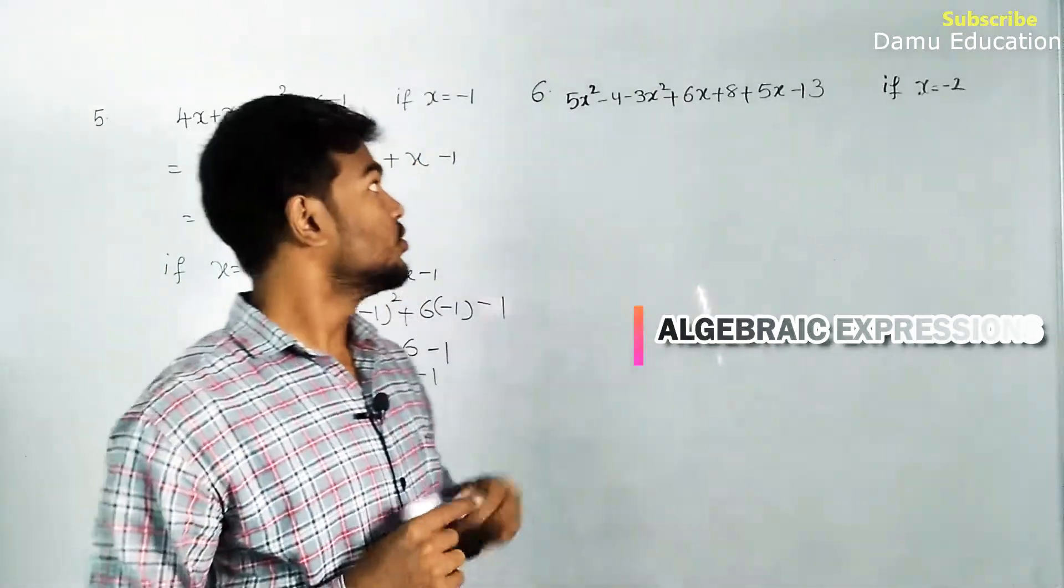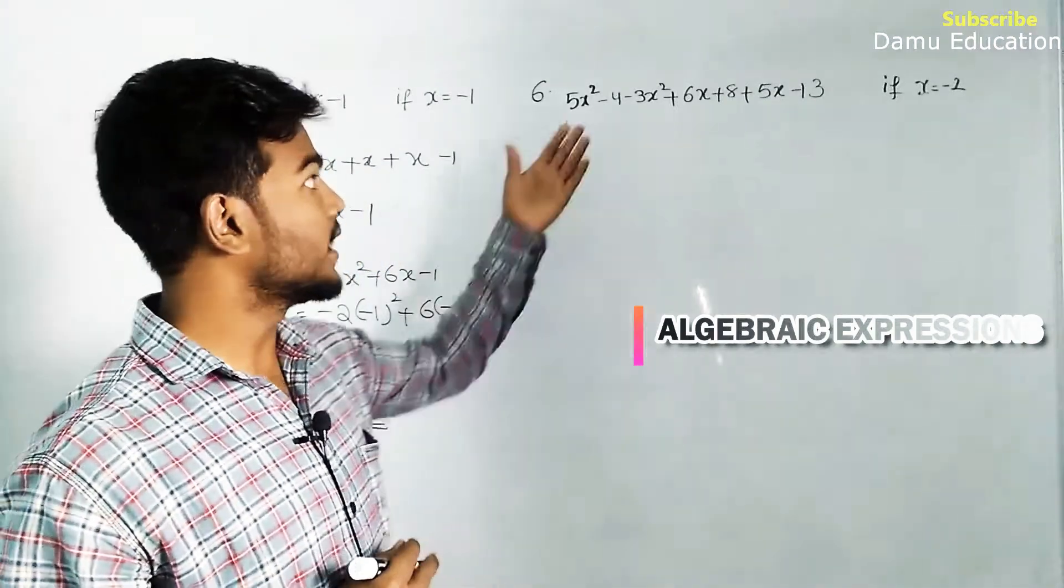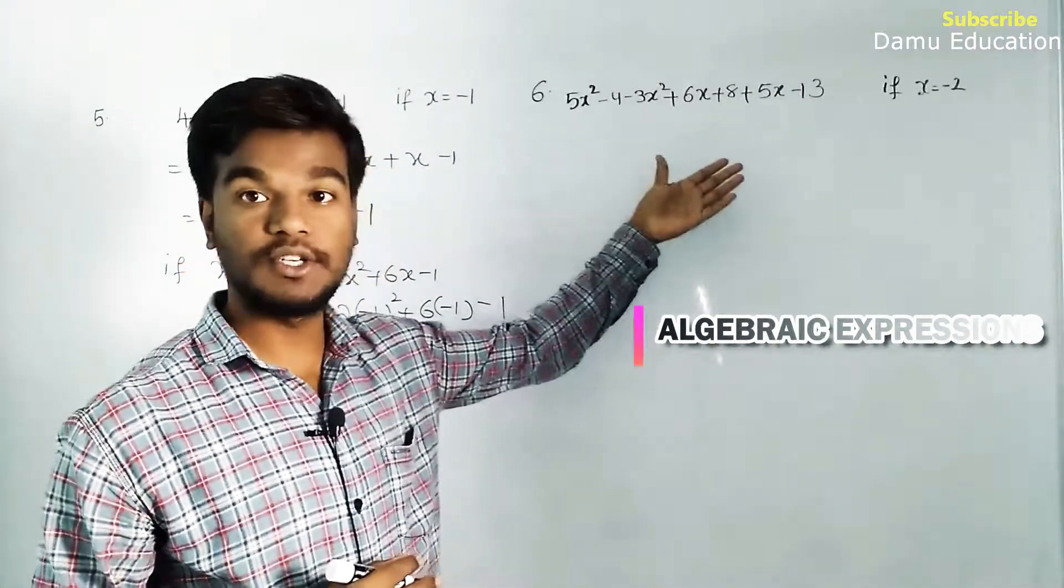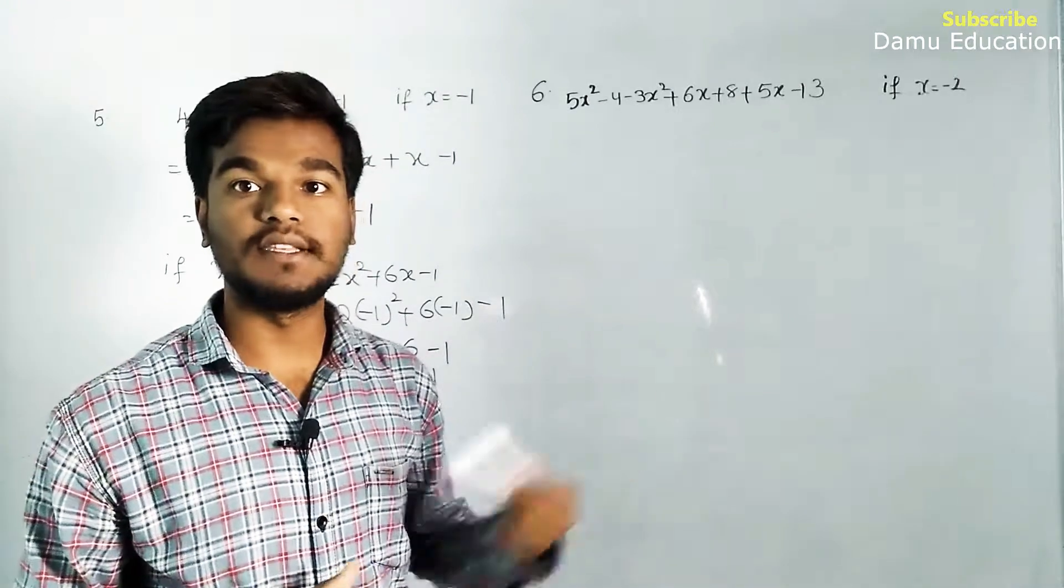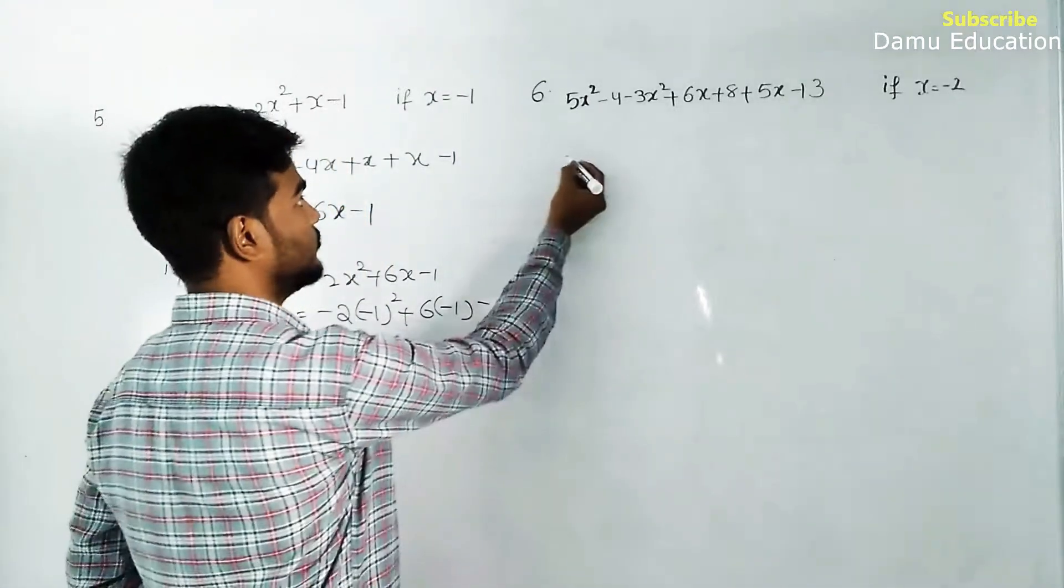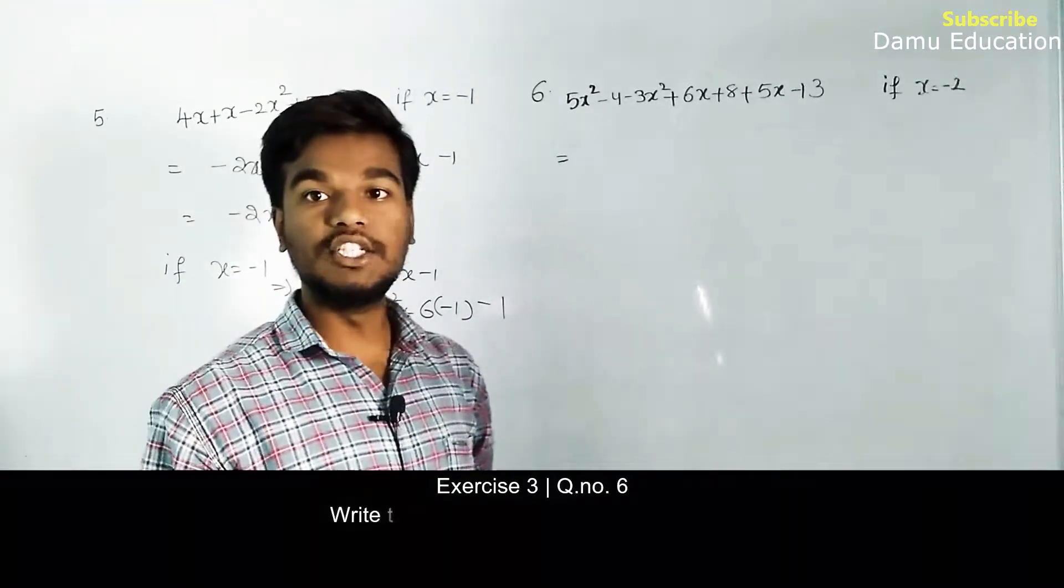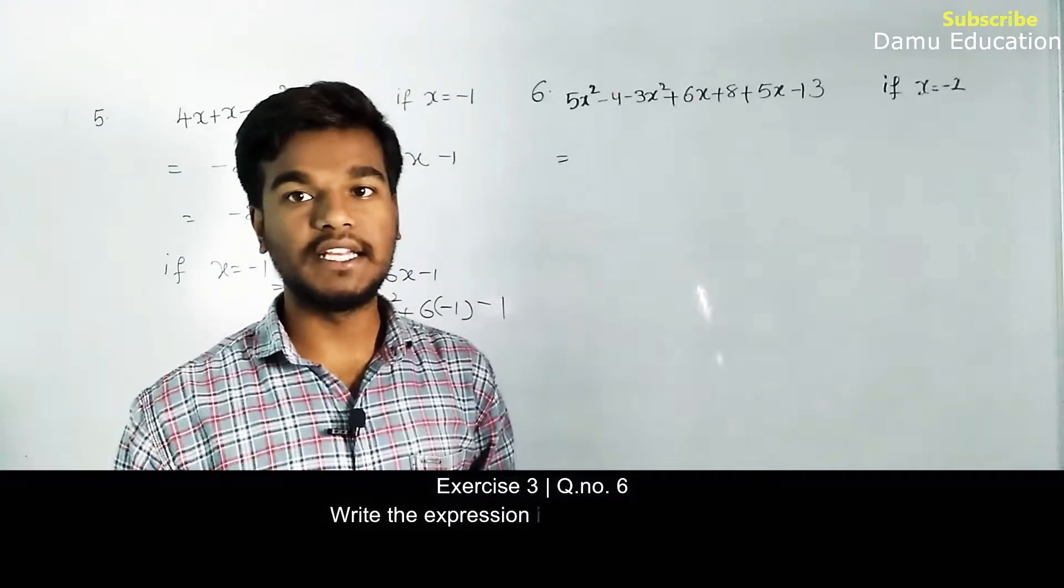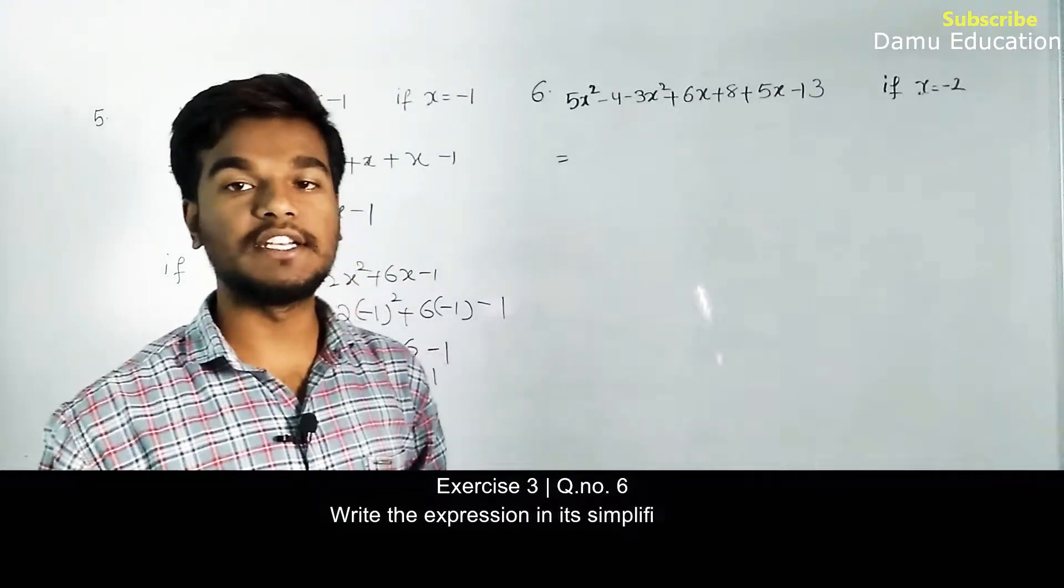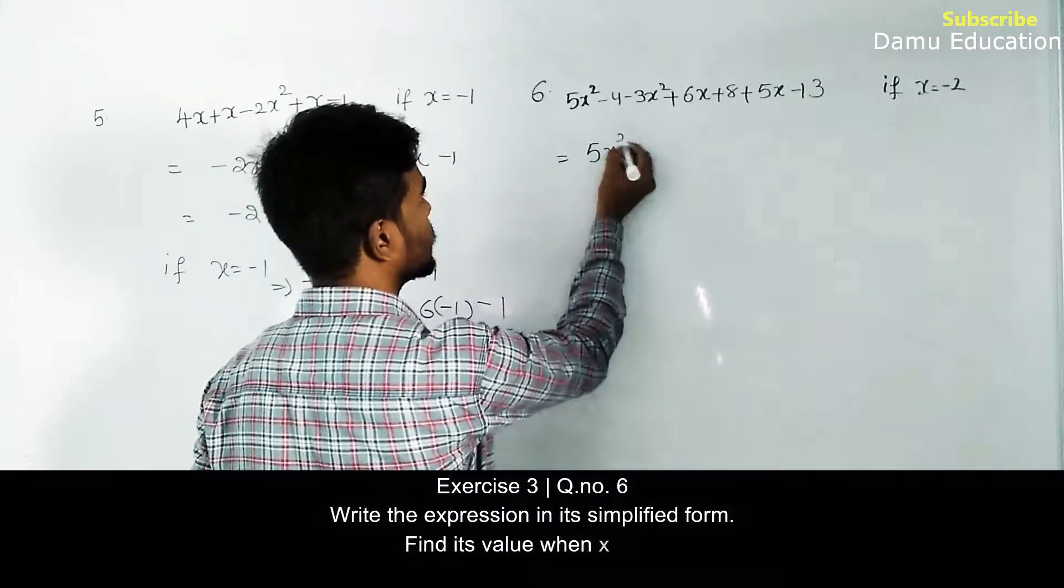Next question. Question 6: given one expression, we have to simplify it and substitute x = -2. First write all terms in descending order with like terms in one place. Start with 5x².